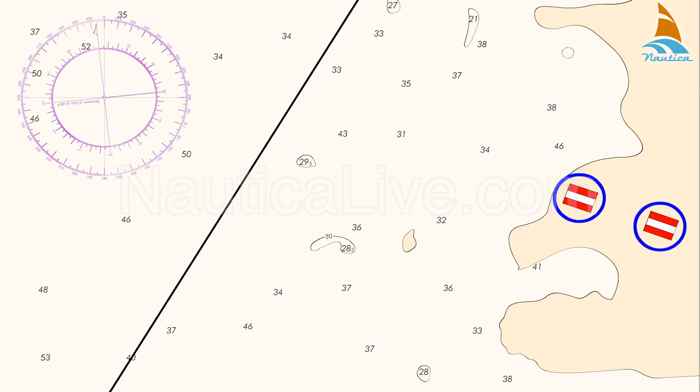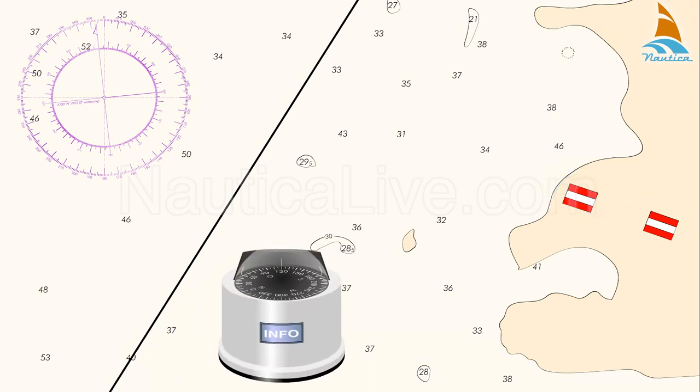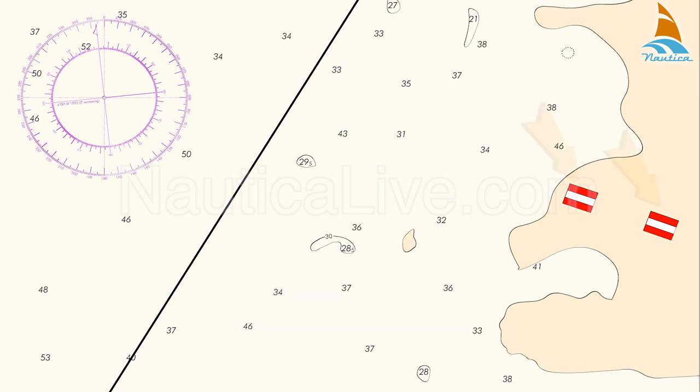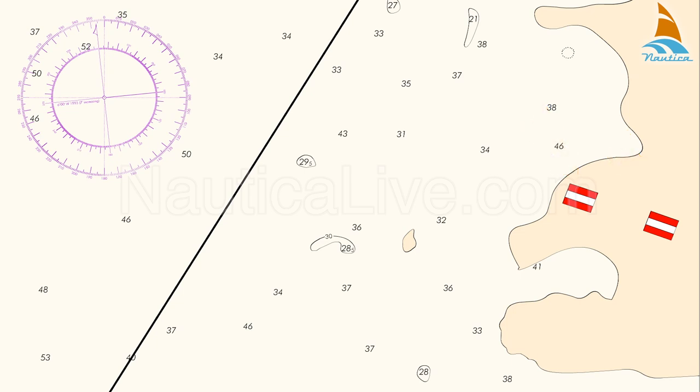Transits are not only used to determine your position line, they can also be used to check your compass error. On your chart, look for two objects in line. As you already know, transits can be man-made objects or natural ones.